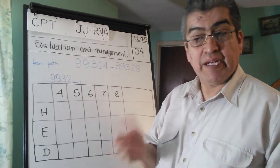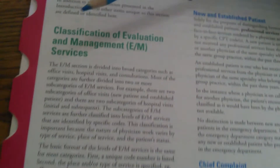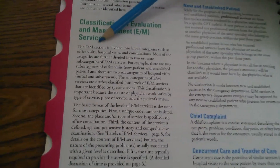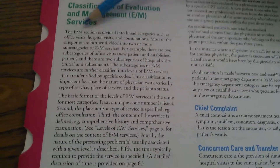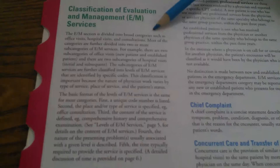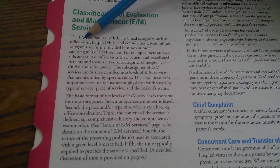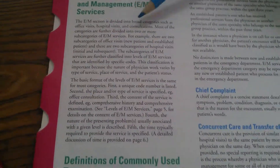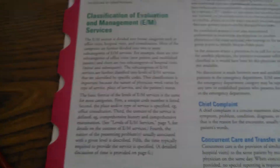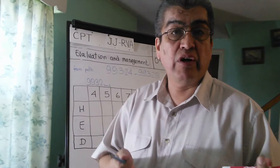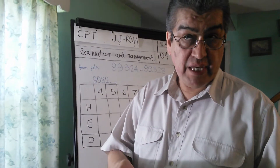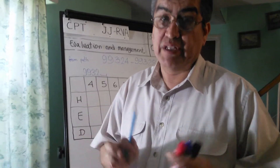This part of CPT is Evaluation and Management. Let me read you just the first sentence from the guidelines: the Evaluation and Management — which they call E/M — section is divided into broad categories such as office visits, hospital visits, and consultations. This section deals with whether the patient went to the doctor's office or hospital, and what was done — if it's a new patient, an established patient, and all that.